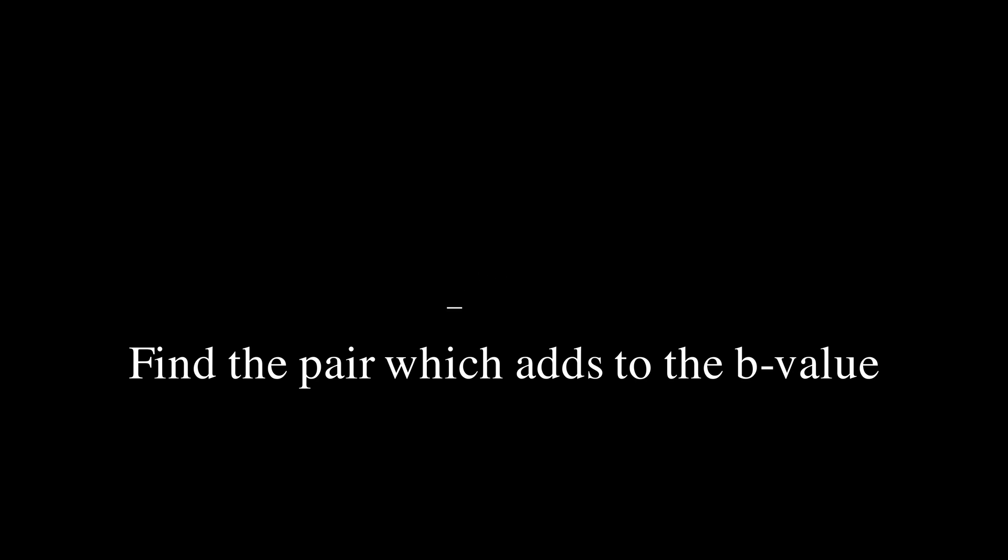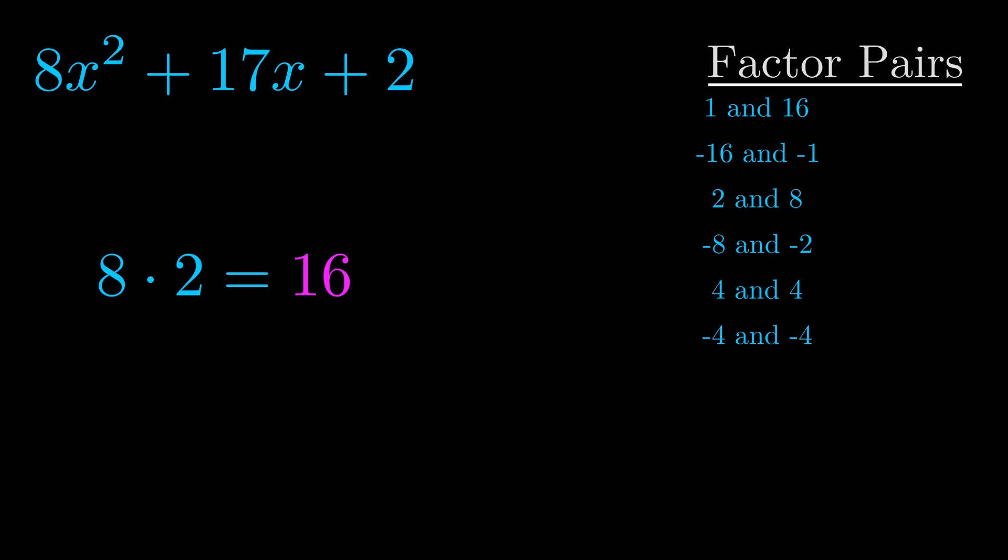The b value is the coefficient on the x term. That's the middle term, the one that we haven't done anything with yet. And really this is the only factor pair that we need.